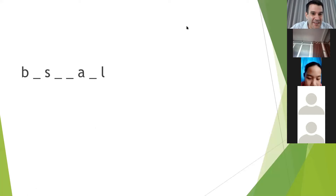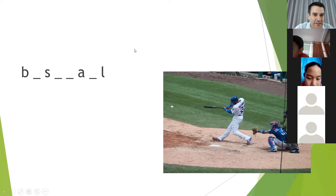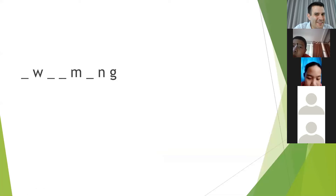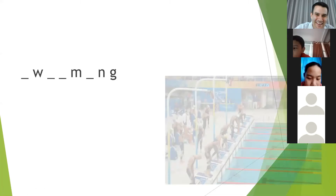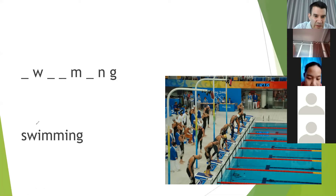How about this one? Baseball — very famous in America. Here is a picture of baseball. Baseball is spelled B-A-S-E-B-A-L-L. Next one — swimming. Swimming. This is not a game, but this is a sport. It is spelled S-W-I-M-M-I-N-G. So if you just spell swim, it is S-W-I-M. But if you add -ING, you must add another M — S-W-I-M-M-I-N-G.